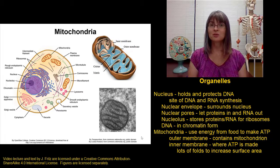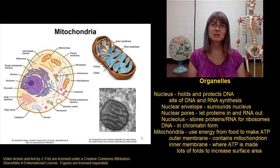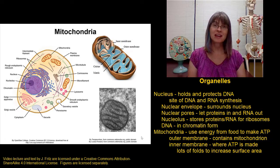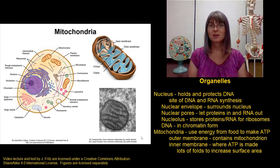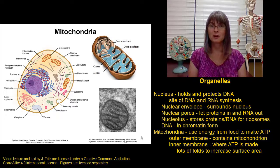Cells that are very active and do a lot of work, like muscle cells for example, have very high ATP needs, and those types of cells tend to have more mitochondria in them. Cells that are less active, something like a fat storage cell, don't need as much ATP, and they only have a few mitochondria.